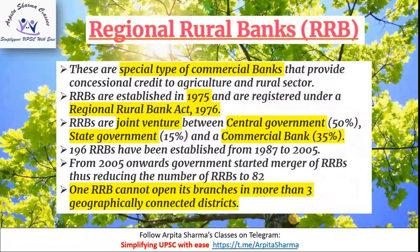Regional Rural Banks (RRBs), also called Grameen Banks, are special types of commercial banks that provide concessional credit to the agriculture and rural sector. RRBs were established in 1975 and are registered under the Regional Rural Banks Act 1976. They are a joint venture between the central government (50% share), state government (15% share), and a commercial bank (35% share). One RRB cannot open its branches in more than 3 geographically connected districts.